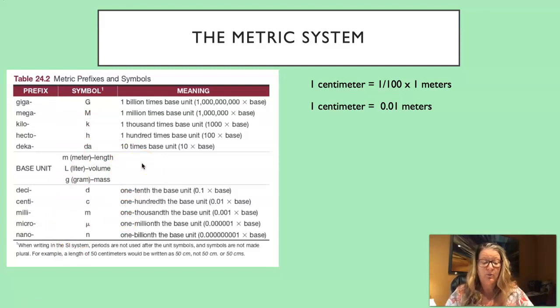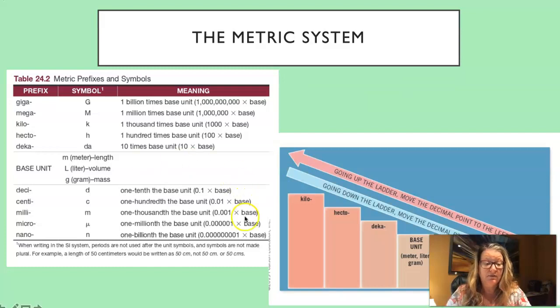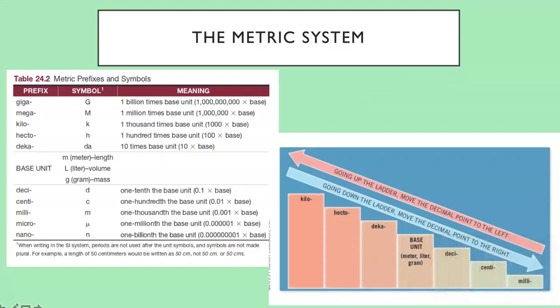Another way that you might find easier is to use this visual chart, and this is also in your lab. Now what's shown here is a staircase. And what you do is you look for the prefix or the base unit which is in the middle. And you have to decide are you going to go up the staircase or down the staircase to convert from one to another unit. And then you just move the decimal.